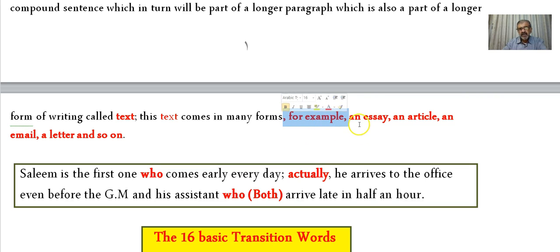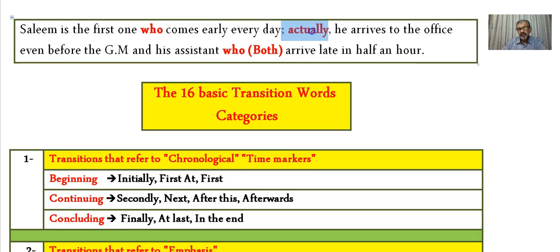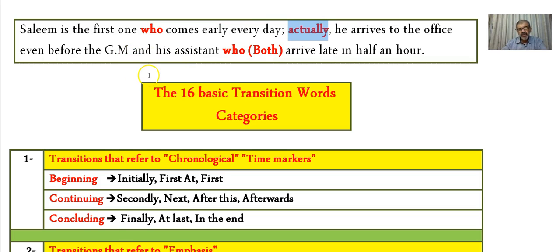A text comes in many forms — for example an essay, an article, an email, a letter — depending on the kind of writing or communication you are involved in. Here the four sentences are transferred into one complex sentence: 'Salim is the first one who comes early every day; actually, he arrives to the office even before the GM and his assistant, who both arrive late by half an hour.' Four sentences were turned into one complex sentence using punctuation marks and transition words.